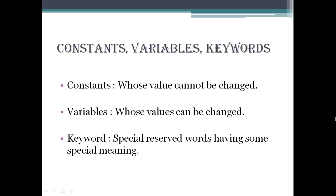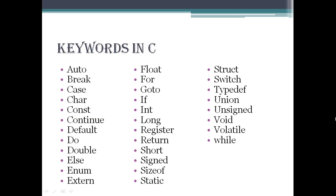Constants are the words whose values cannot be changed whereas variables are whose values can be changed. Keywords are special reserved words having special meaning. There are altogether 32 keywords in C language. We will discuss their use in further upcoming videos.